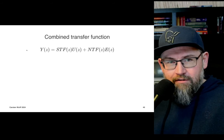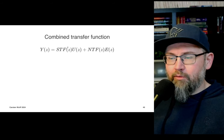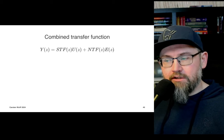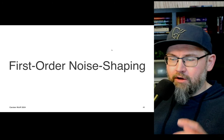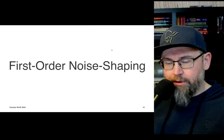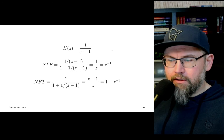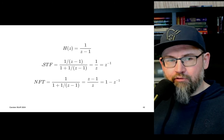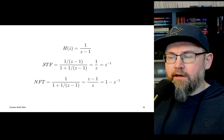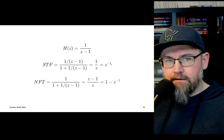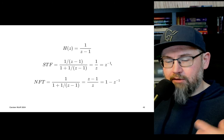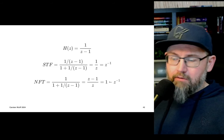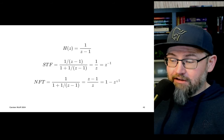For the complete system, the output is: STF × input + NTF × quantization noise. For first-order noise shaping, putting in an integrator: the signal transfer function is just a delay — we get the same as the input, just delayed. But the noise transfer function is 1 − z⁻¹, which behaves very differently.